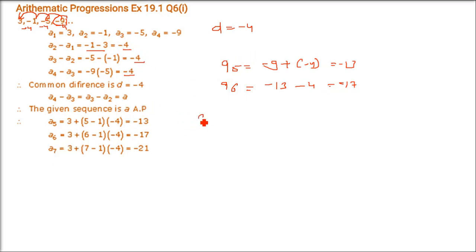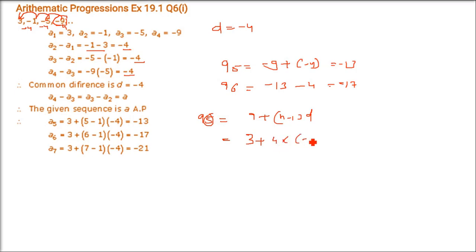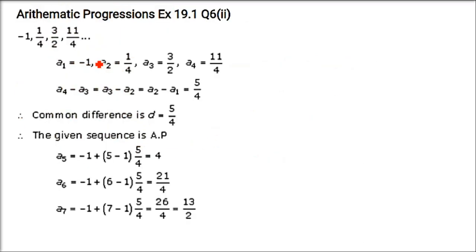Alternatively, using the nth term formula aₙ = a + (n-1)d: for a₅, A = 3, n = 5, d = -4, so 3 + (4)(-4) = 3 - 16 = -13. This confirms both methods give the same result.